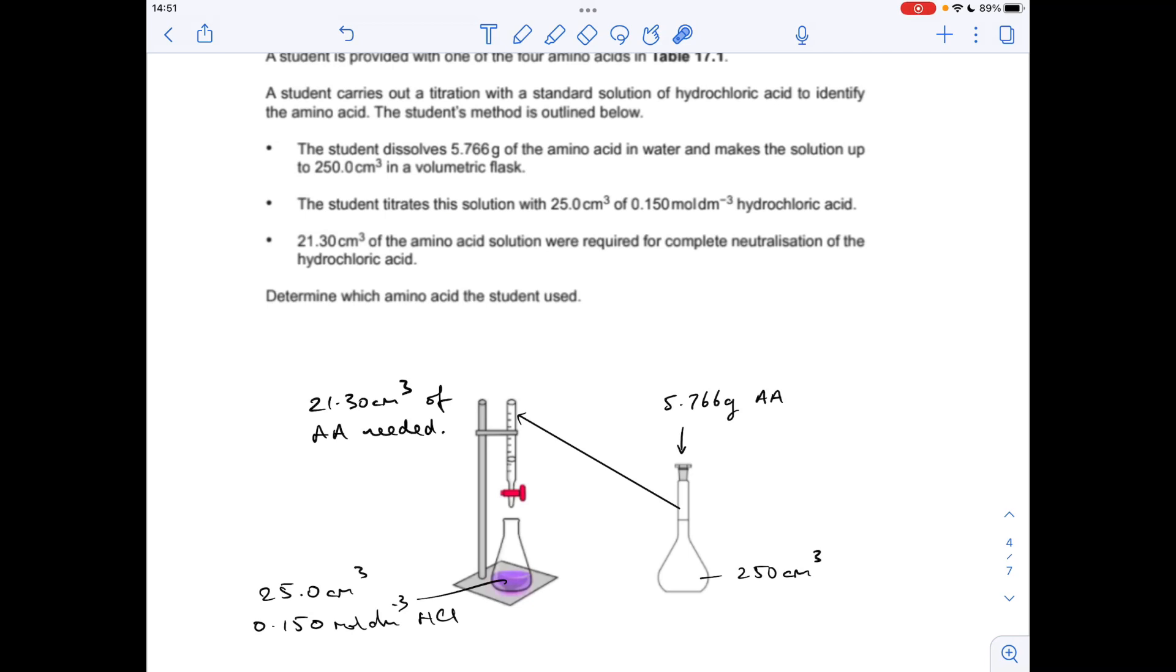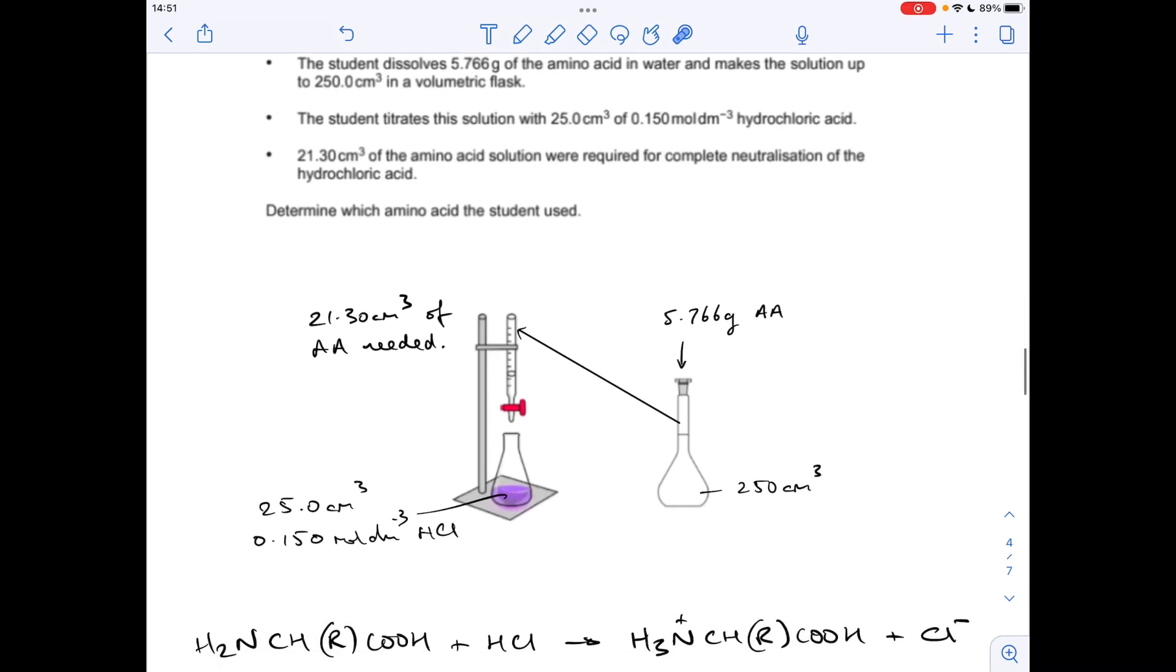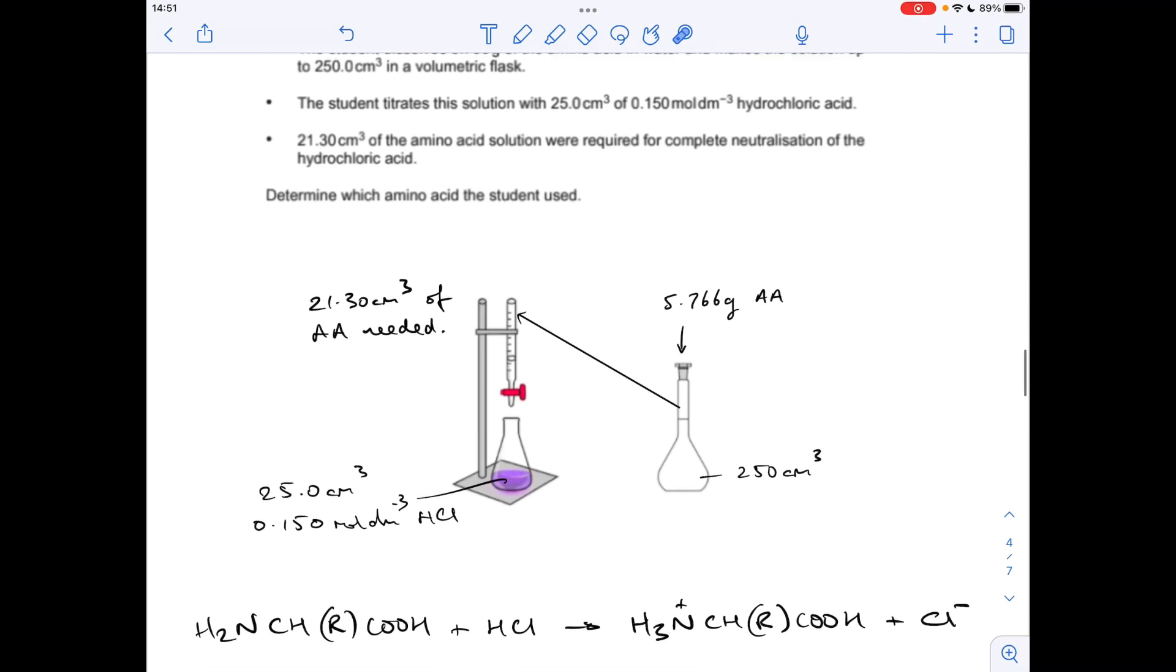The thing we haven't got in this question is an equation and we're expected to know what it would look like. So I'm going to use that general formula of the alpha amino acid and bring in the HCl.